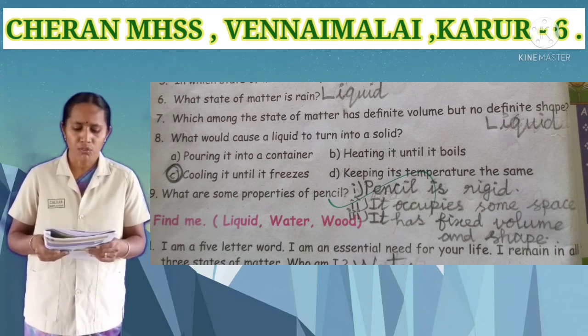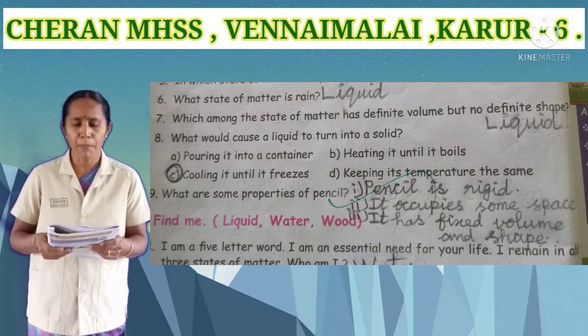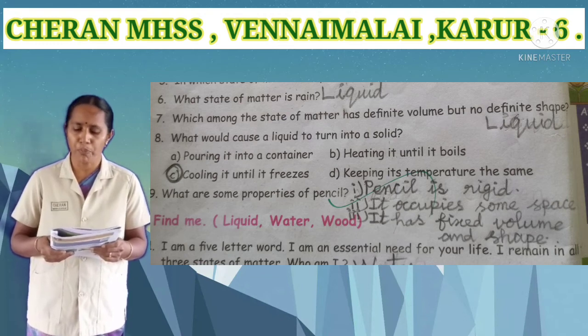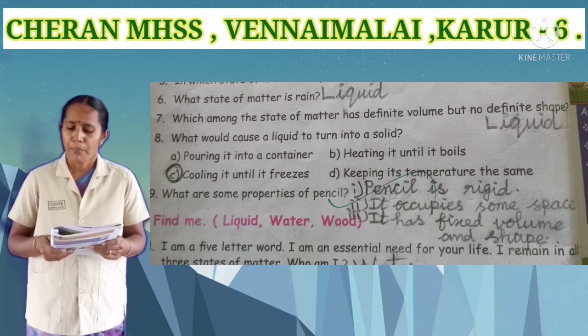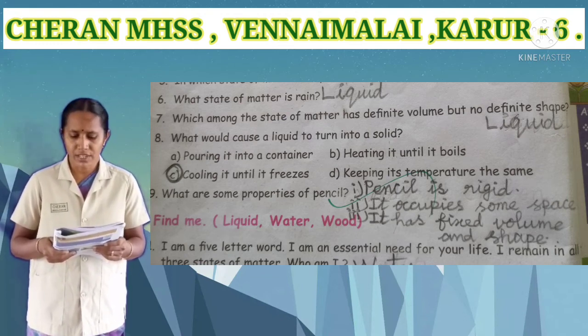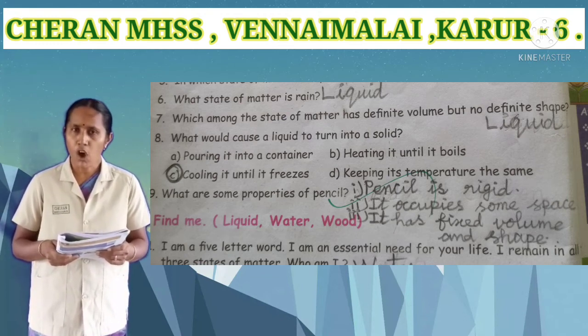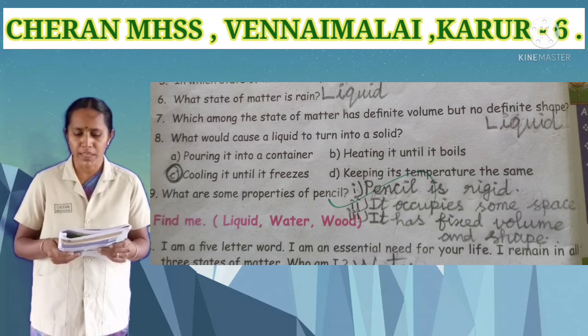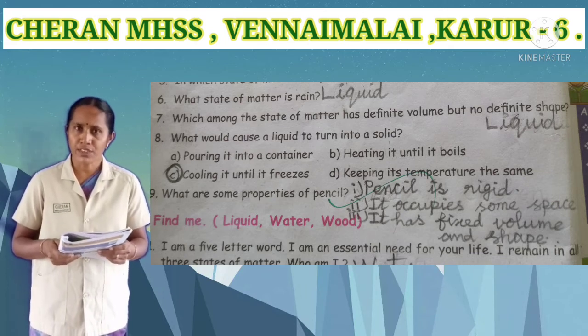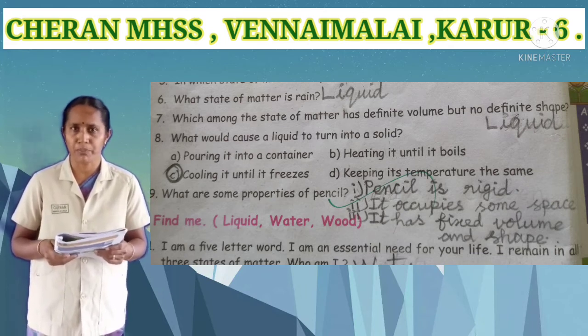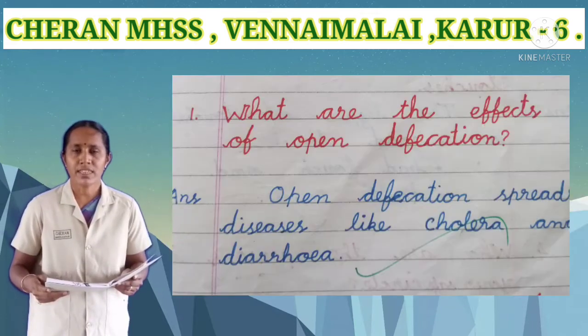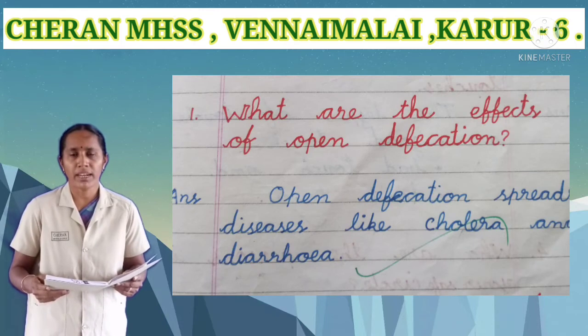Ninth one: what are some properties of a pencil? A pencil is rigid. It occupies some space. It has a fixed volume and shape. See the eighth Roman numeral: answer the following questions.